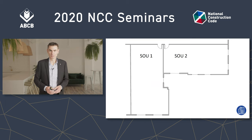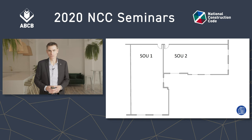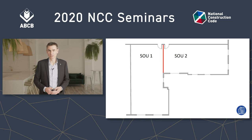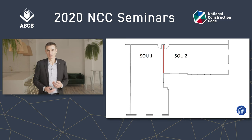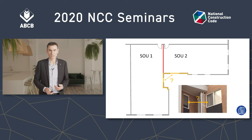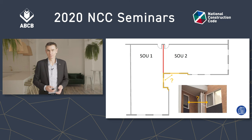This is what it looks like in plan. We've got SOU 1 on the left and SOU 2 on the right. Under specification C1.1 table 3, the wall between these SOUs needs to have an FRL. So is it necessary to protect these external walls and the openings in them to stop fire spreading from SOU 1 to SOU 2?